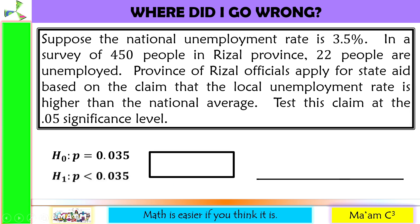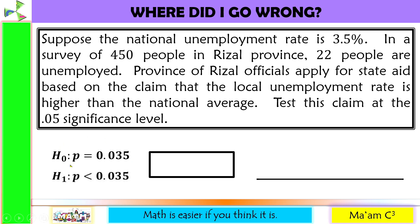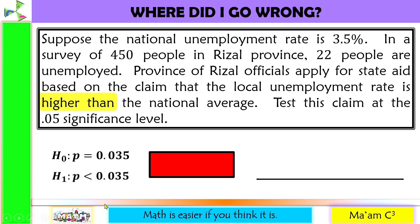Suppose the national unemployment rate is 3.5%. In a survey of 450 people in Rizal province, 22 people are unemployed. Province of Rizal officials apply for state aid based on the claim that the local unemployment rate is higher than the national average. The null hypothesis is H sub 0: P is equal to 0.035. The given alternative hypothesis uses less than, but the keyword is 'higher than.' So this is incorrect. The correct answer is H sub 1: P is greater than 0.035.